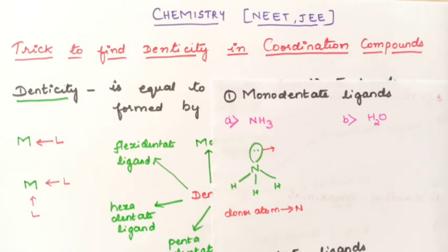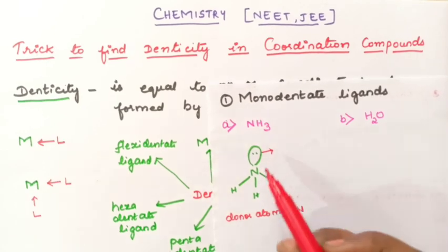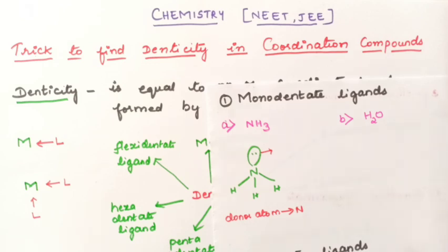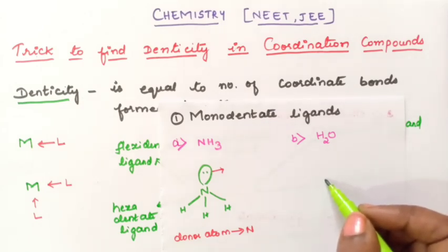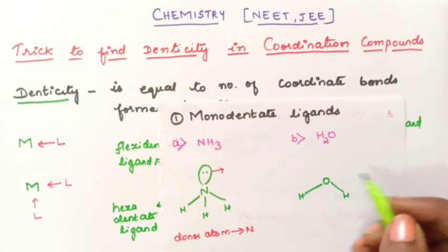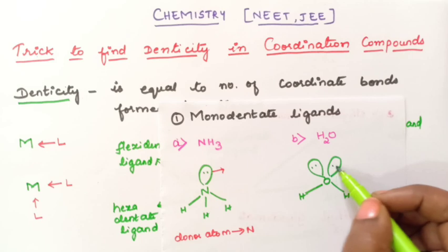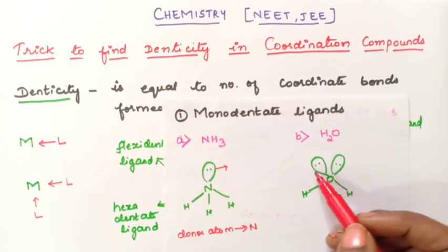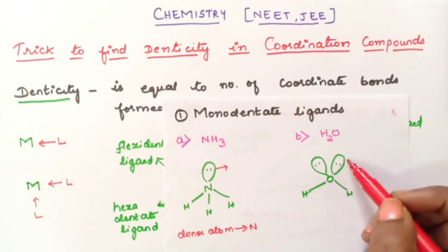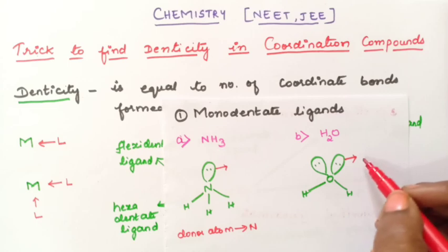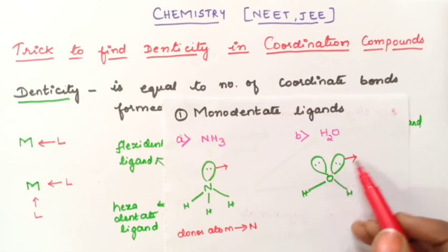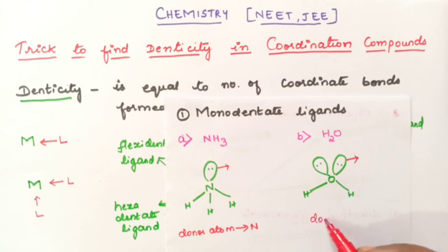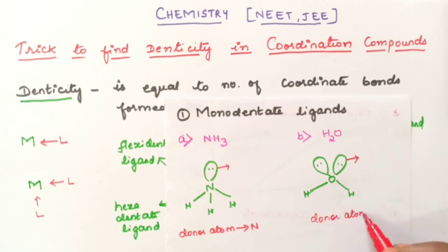In the NEET exam they will ask how many donor atoms are there or which are the donor atoms, so you should know which atom is forming the coordinate bond. The second example is water, H2O. The structure has oxygen with two hydrogens and two lone pairs of electrons. Out of these two lone pairs, it will form a coordinate bond using only one lone pair. So it is called as monodentate ligand, and the donor atom is oxygen.